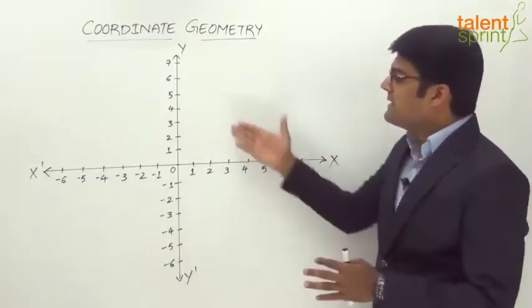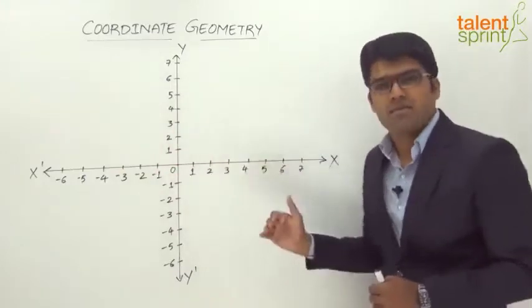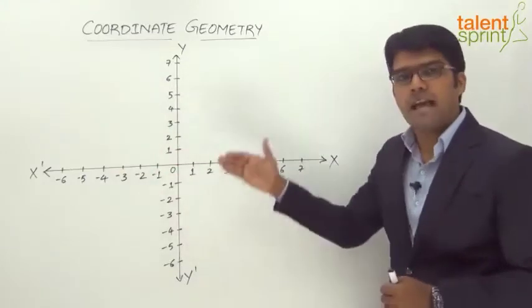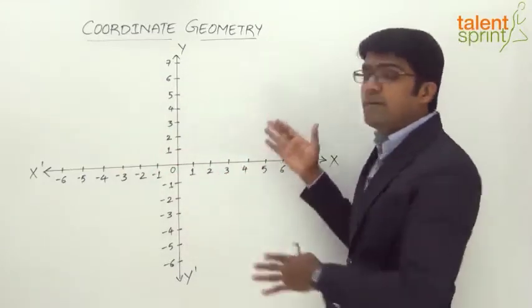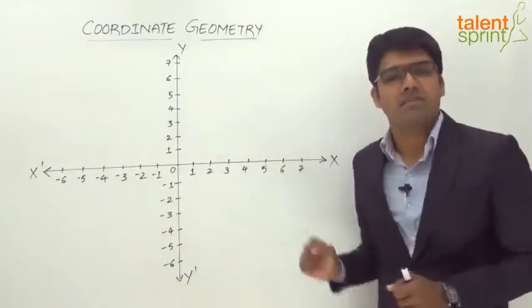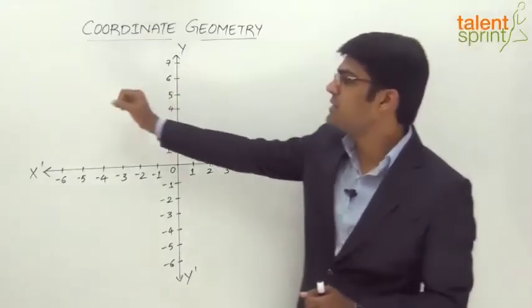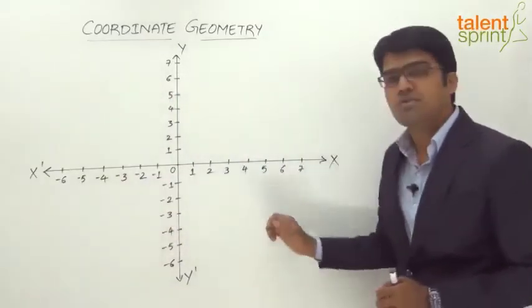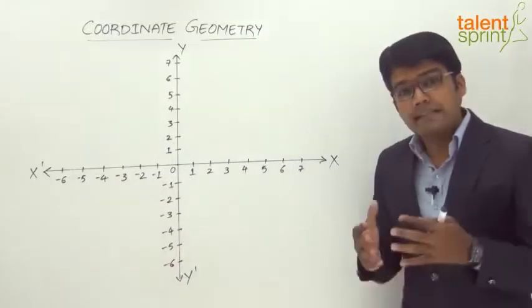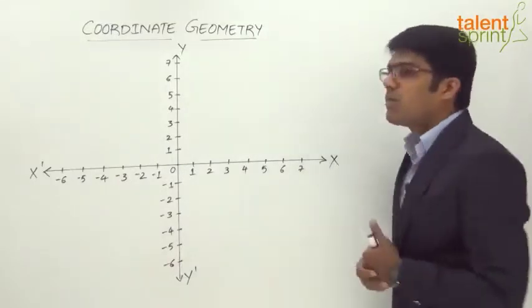These two mutually perpendicular axes, or the coordinate axes, divide this plane into four different regions — region 1, region 2, region 3, and region 4 — and these regions are known as quadrants.